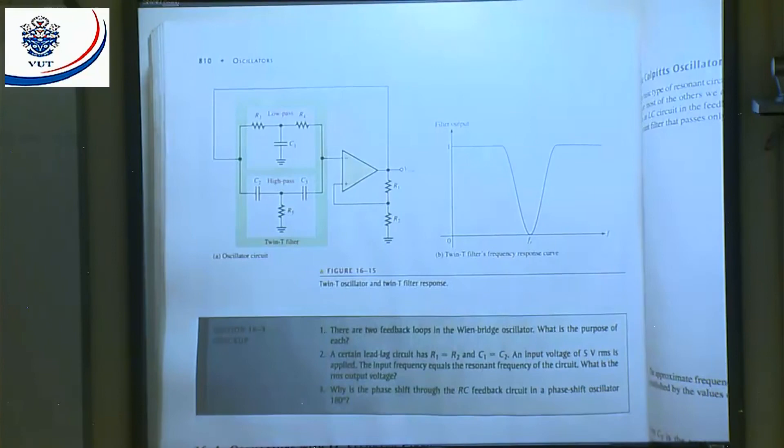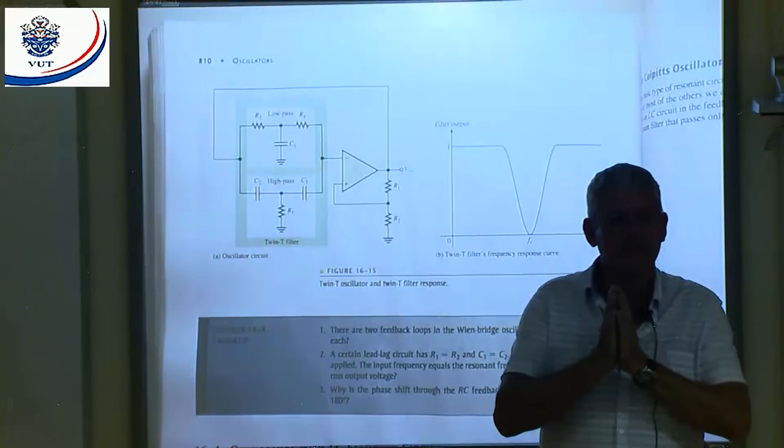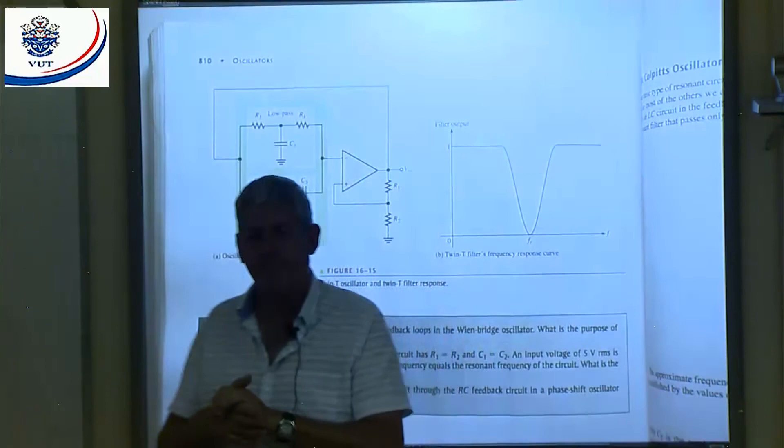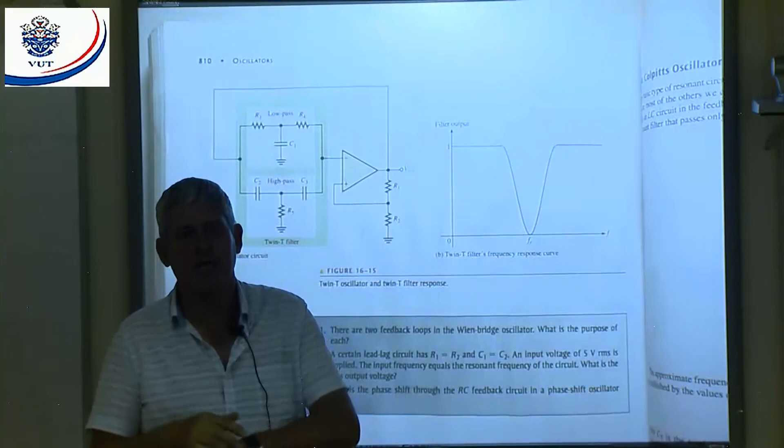That brings us to our LC oscillator. The LC oscillator is basically an LC resonant circuit connected to an amplifier. We will talk about the LC oscillator next time on Monday. That means now you have time to do revision and prepare for your second test. Thank you.